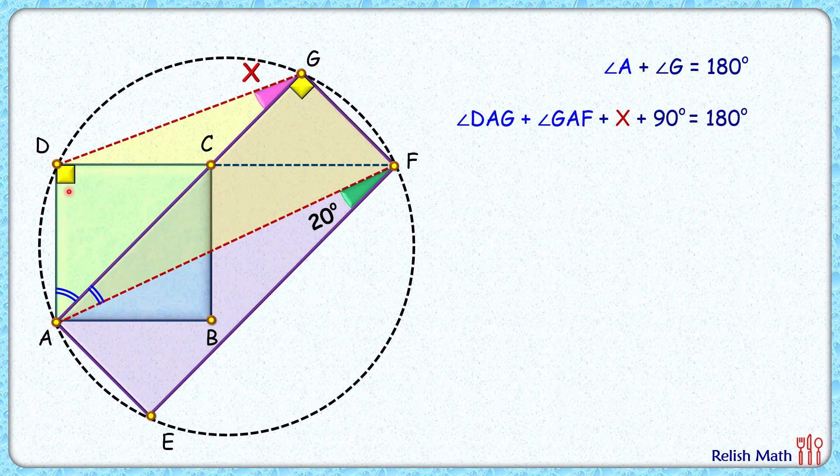Angle DAG is the angle between the side of a square and the diagonal of a square, and thus it's 45 degrees. And angle GAF—if you see, AG and EF are parallel and AF is a transversal. So this green angle and angle GAF are alternate interior angles, and thus it will be 20 degrees.